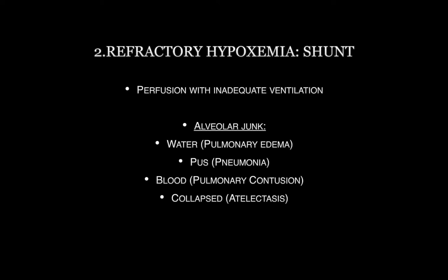Number two is refractory hypoxemia, and what I specifically mean here is shunt physiology — specifically intrapulmonary shunt. There is also intracardiac shunting, which we won't discuss here. We're seeing adequate perfusion to the lungs; however, there's inadequate ventilation. There's good blood supply but poor gas exchange. This could be secondary to material in the alveoli — water from pulmonary edema, pus from pneumonia, or blood from a pulmonary contusion — or the alveoli themselves may be collapsed in the setting of atelectasis.